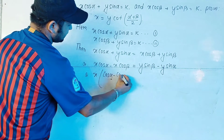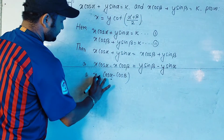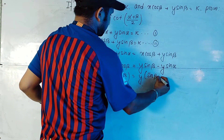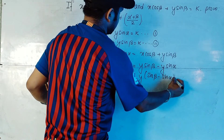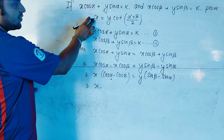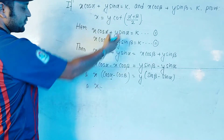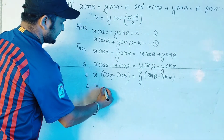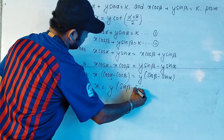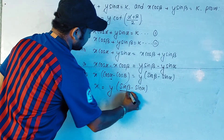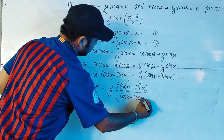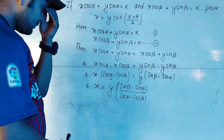After taking x common on the left hand side, we have x·(cos α − cos β). Taking y common on the right hand side gives y·(sin β − sin α). Since we are finding the value of x, we write x = y·(sin β − sin α) / (cos α − cos β).